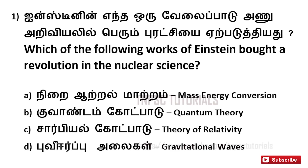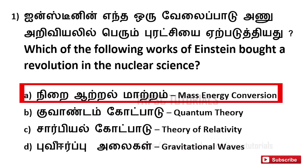First one: which of the following works of Einstein brought a revolution in the nuclear science? A. Mass energy conversion, B. Quantum theory, C. Theory of relativity, D. Gravitational waves. And the answer is A. Mass energy conversion.